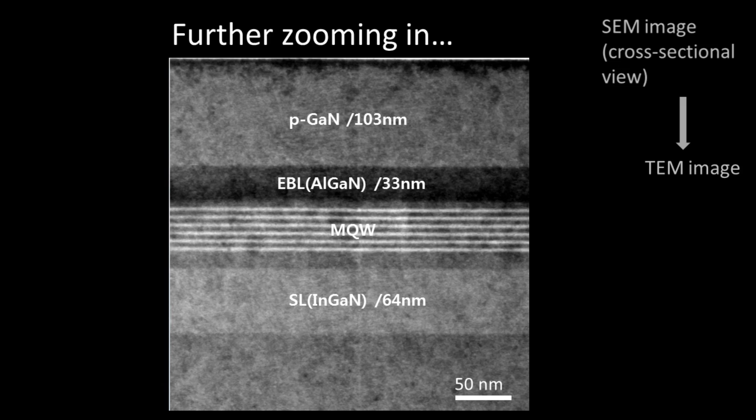Right in the middle of the image, we can see what look like some stripes. They're labelled MQW, which stands for Multiple Quantum Well. That's really the heart of the LED. That's the active or light emitting region.